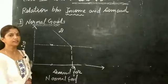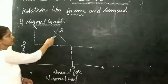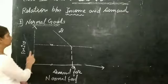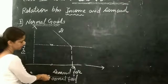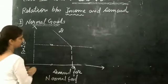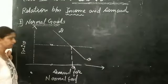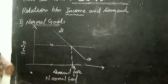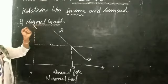Our next topic is the relation between income and demand, and first we will discuss this relation for normal goods. On the Y-axis there is price, on the X-axis there is demand for normal goods, and this is the initial demand curve D-D.